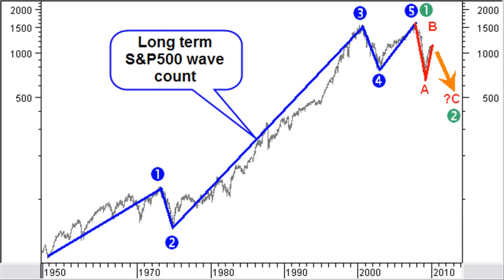In the second half of 2007, we finished a long-term impulse wave up with the blue waves 1 to 5. This means we also finished a very long-term green impulse wave 1. From there, we expect a green correction wave 2.